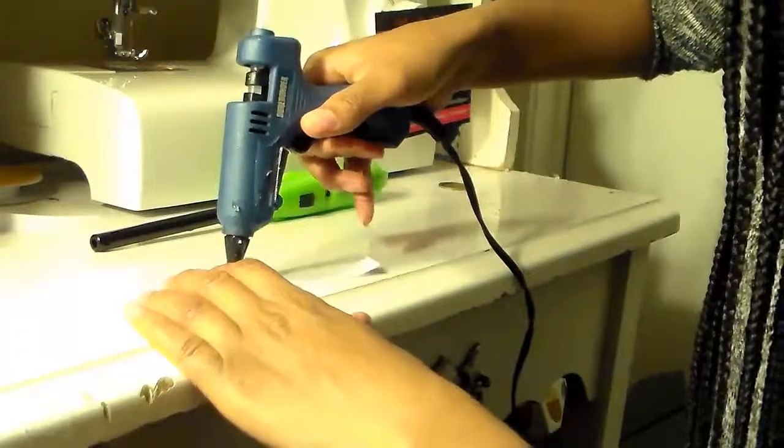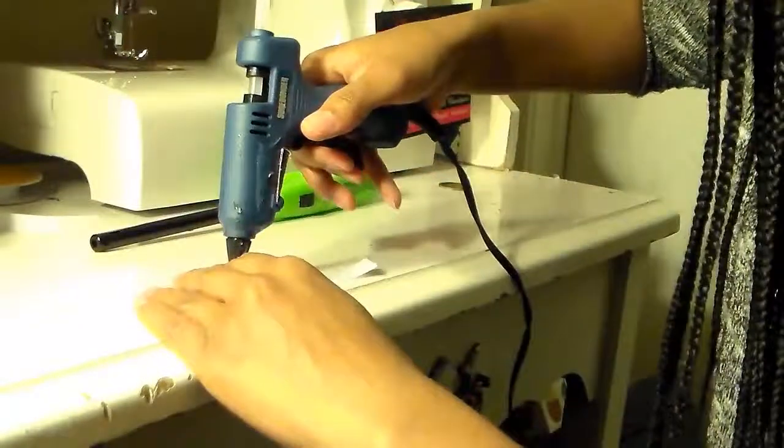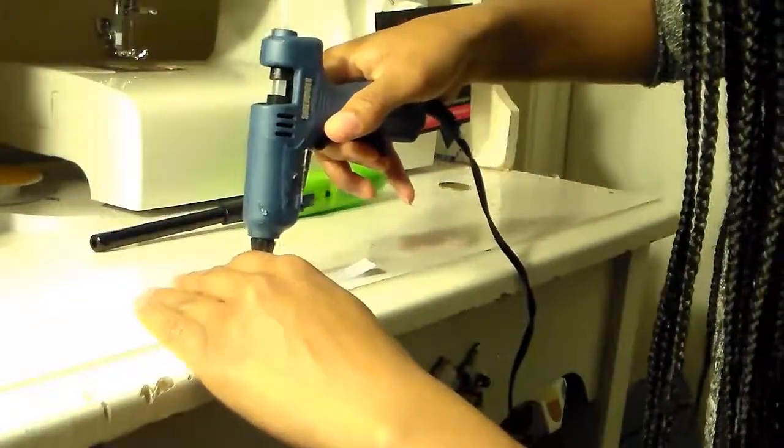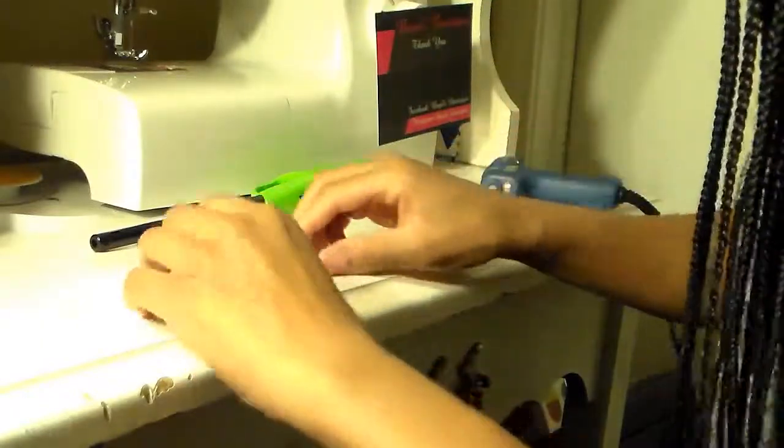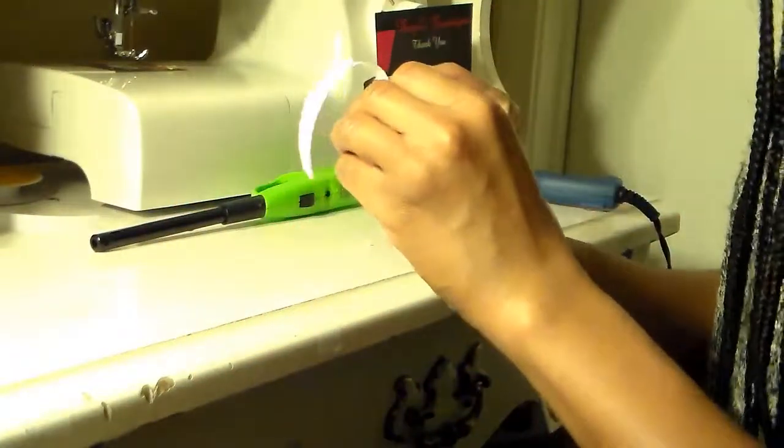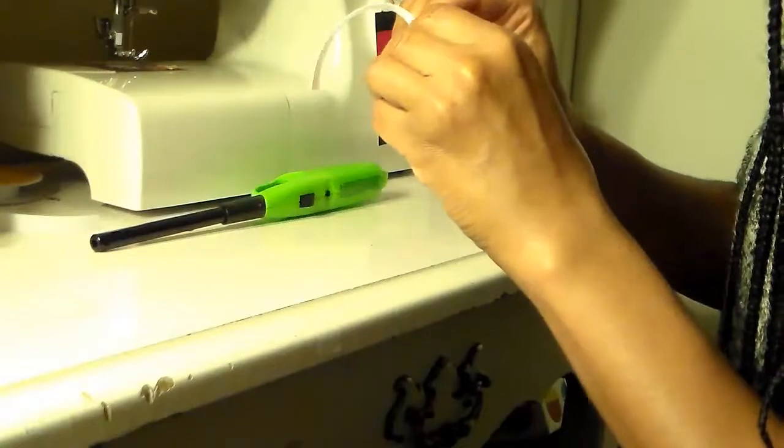Put about a little bit of glue on your ribbon again. About a quarter of the ribbon put some glue. Then push it down in the gap.